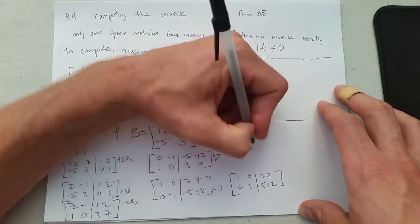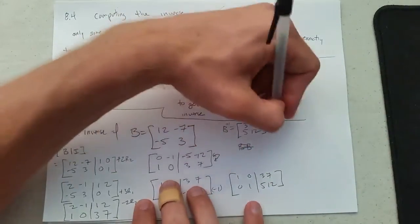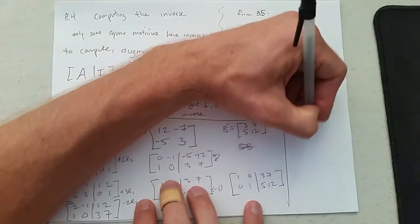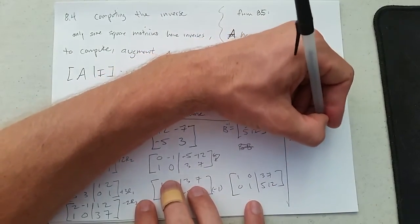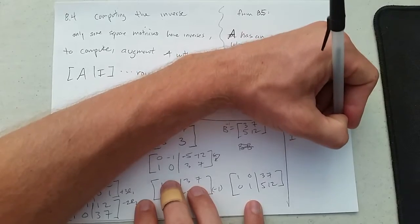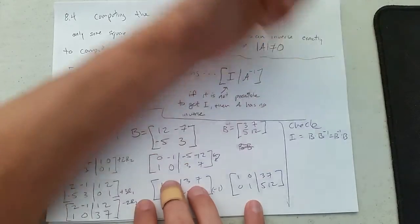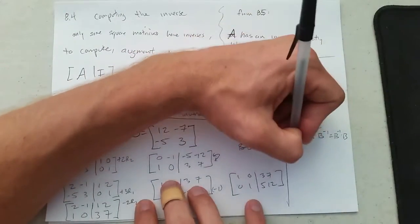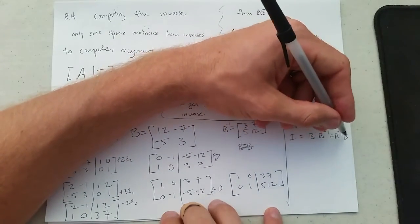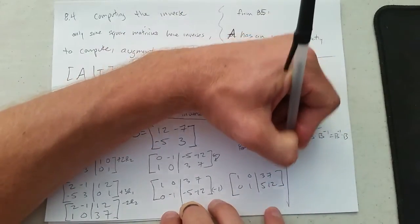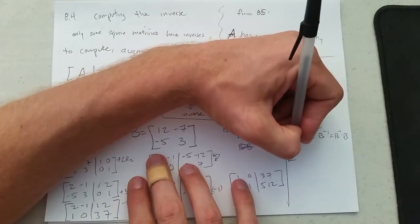We're going to check. What should I get when I multiply? Let me do the check over here. We should be getting the identity equals B times B inverse, also would be equal to B inverse times B. I'm only going to do one of these two. If one of them works out, the other one is pretty much guaranteed to work out. So I'm only going to do B, B inverse.